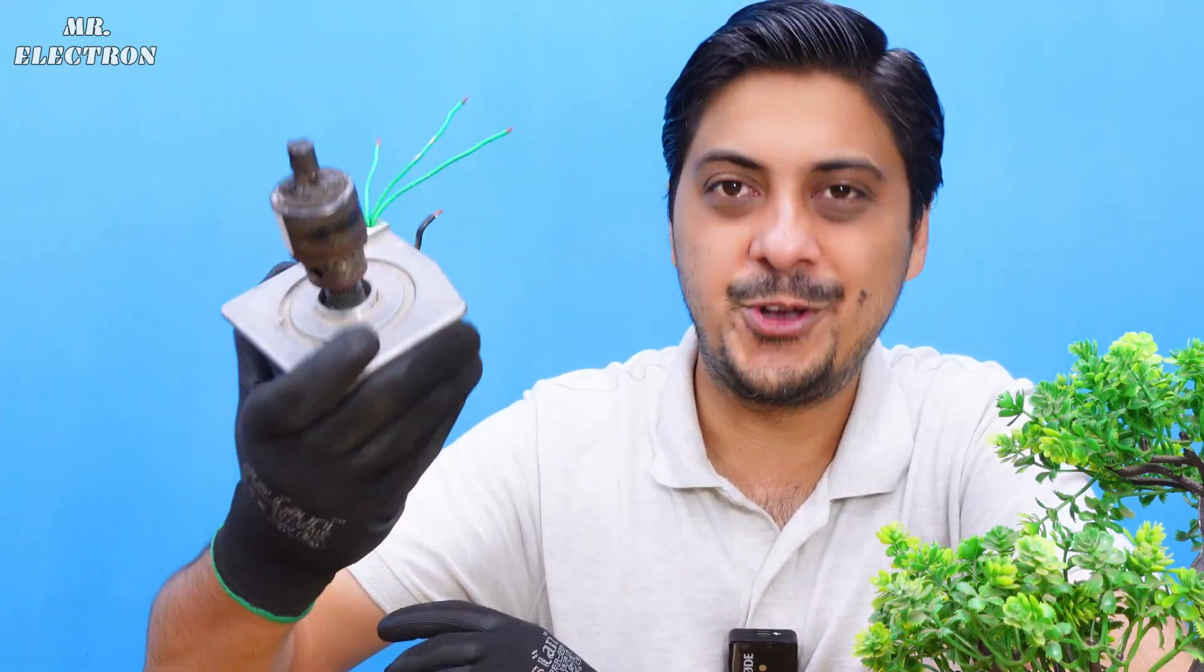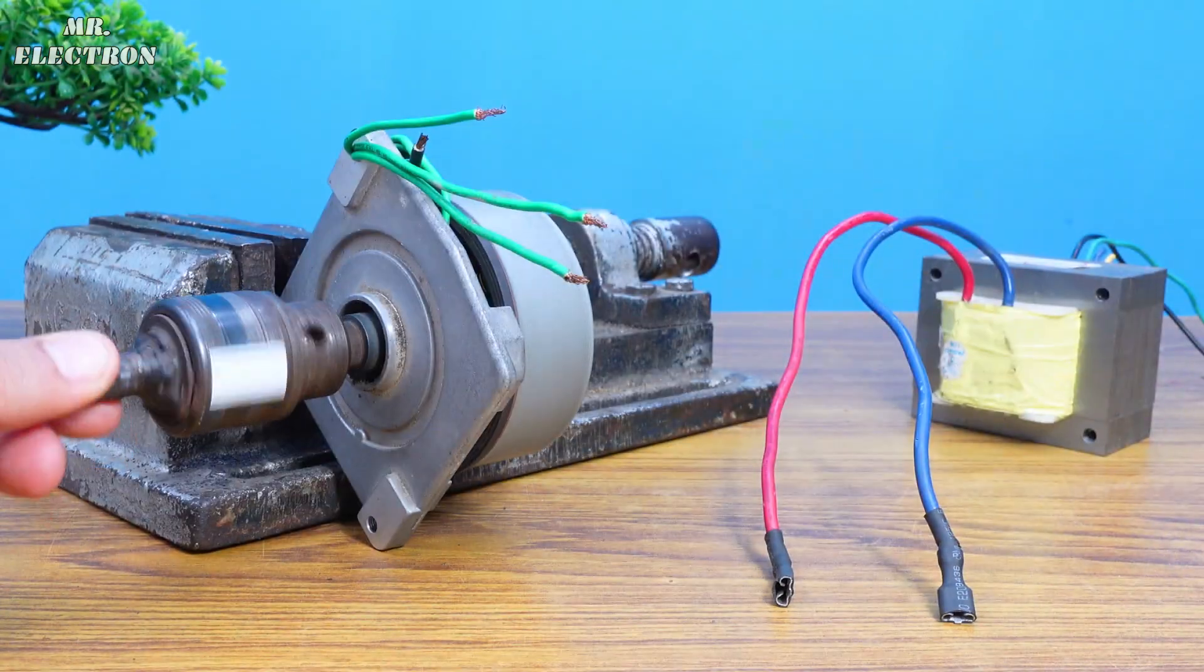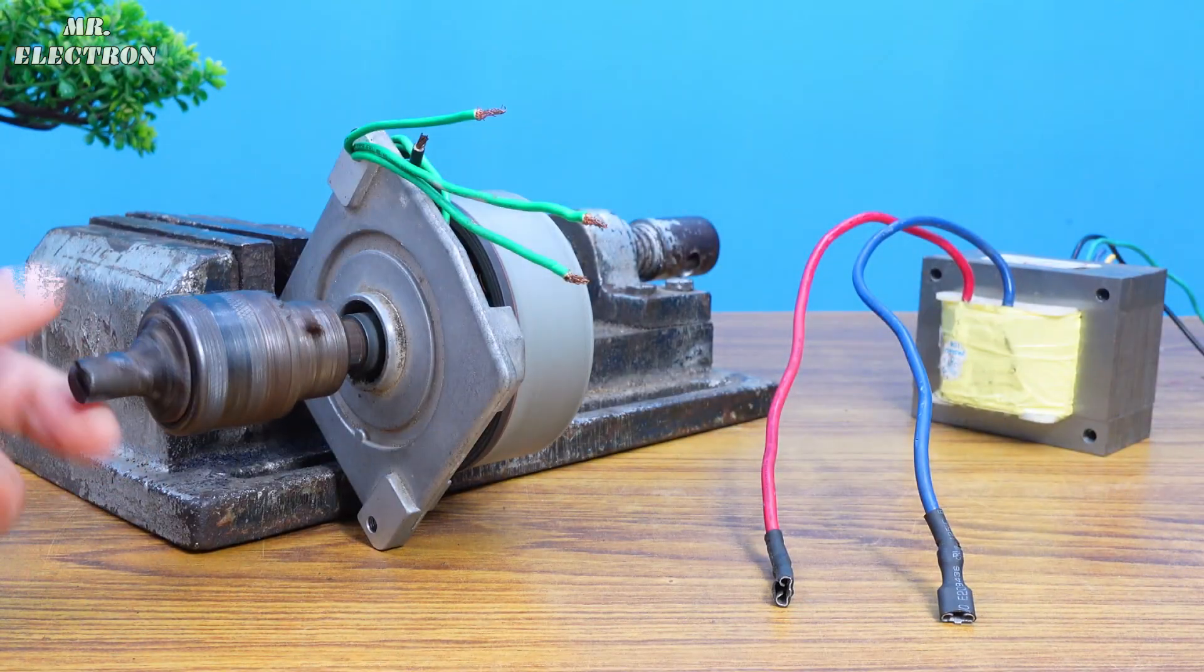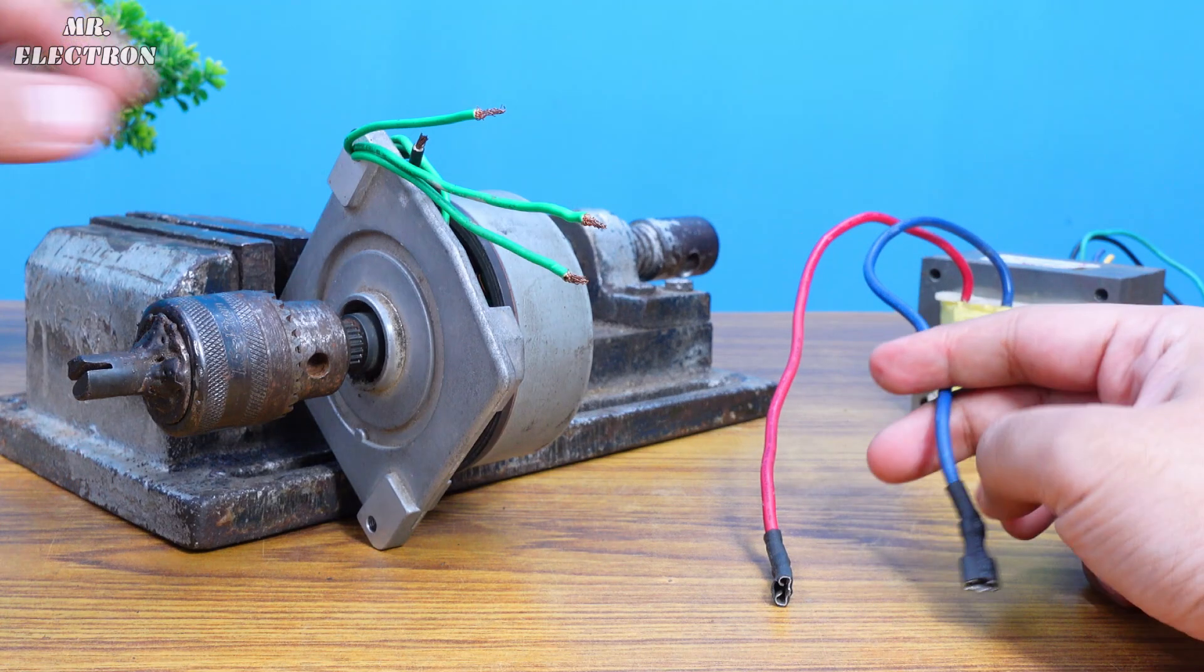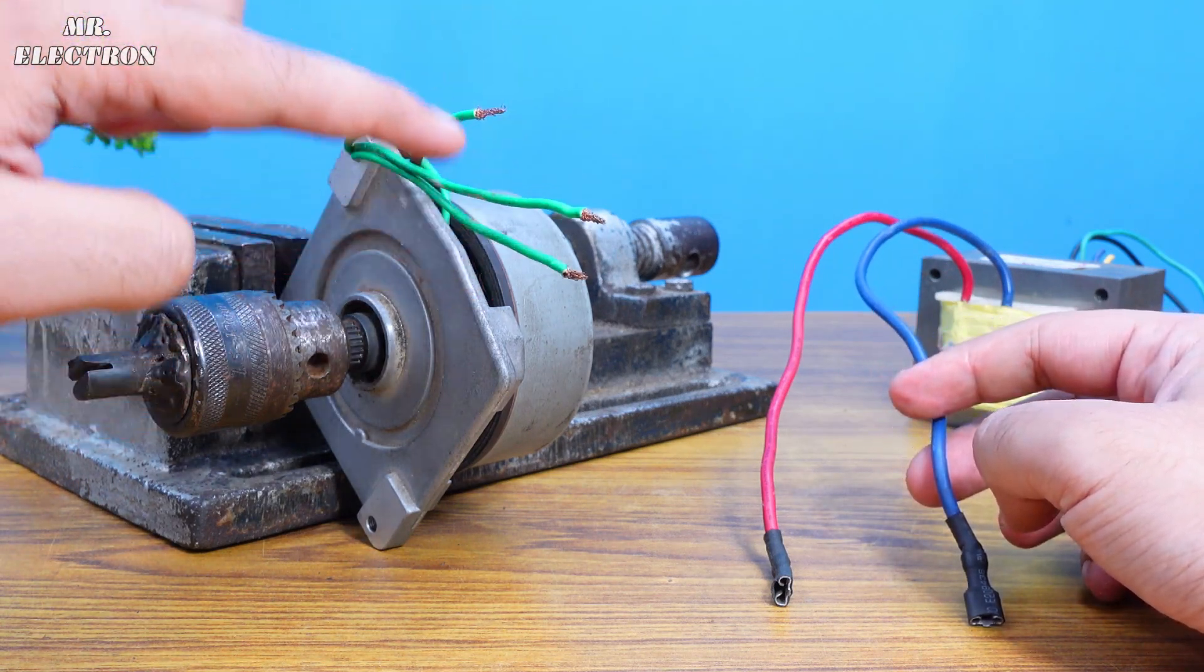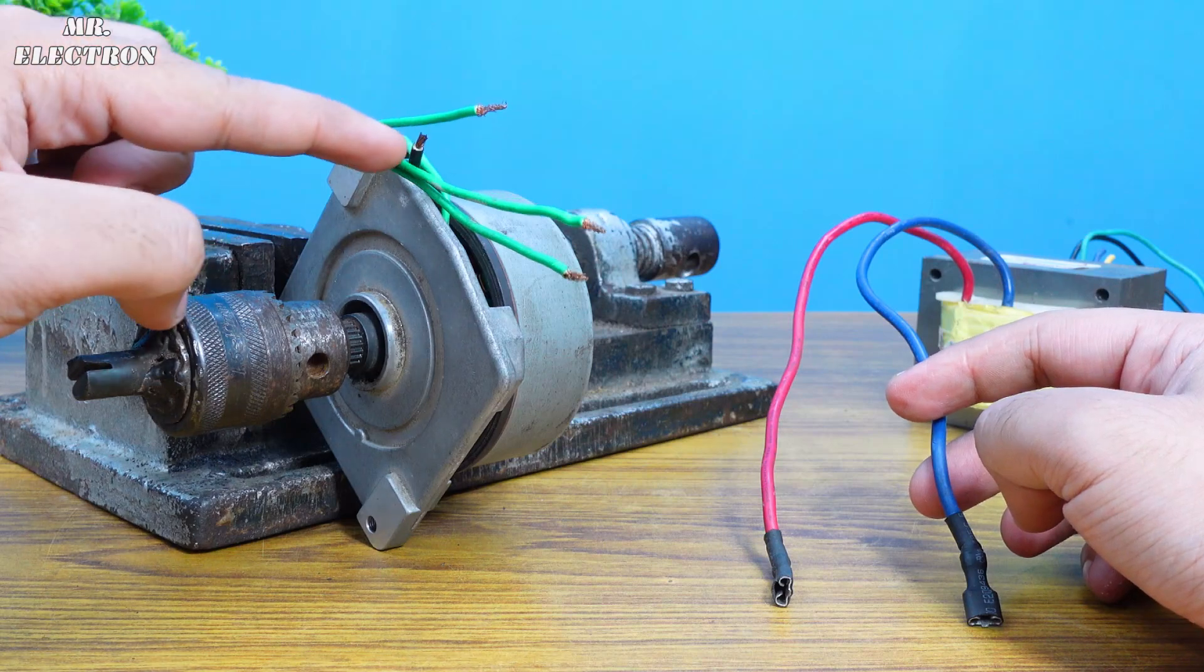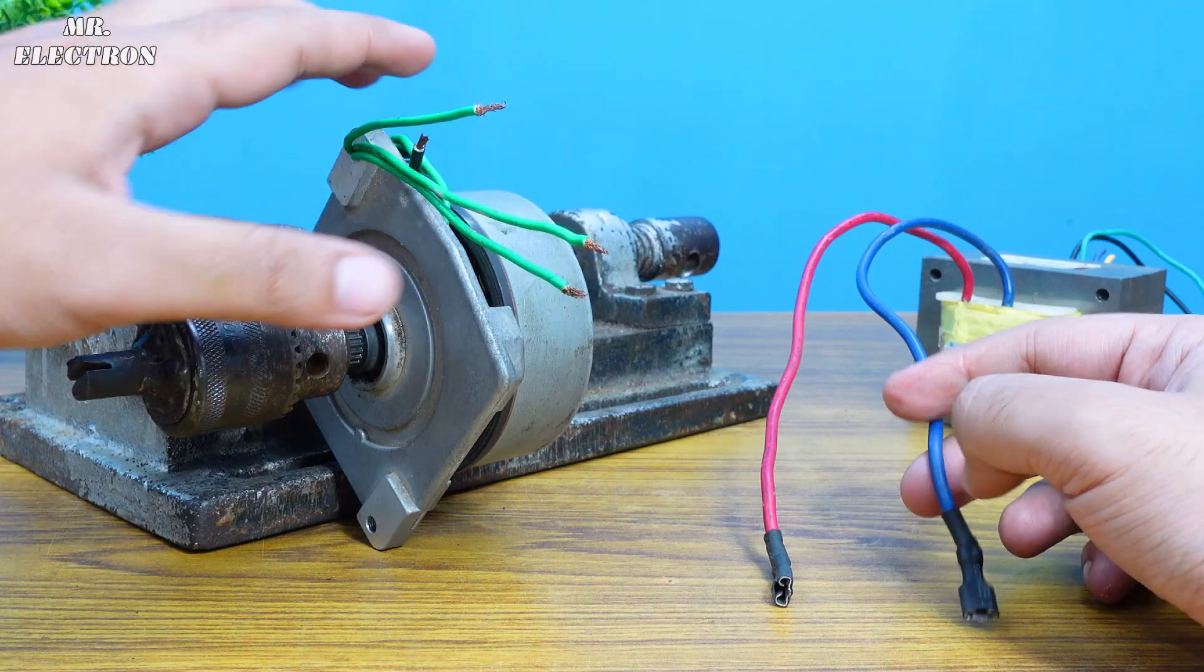So here I have connected the brushless motor to the vice. Now that everything is connected, simply choose any of the two wires from the three phases, not the neutral one.